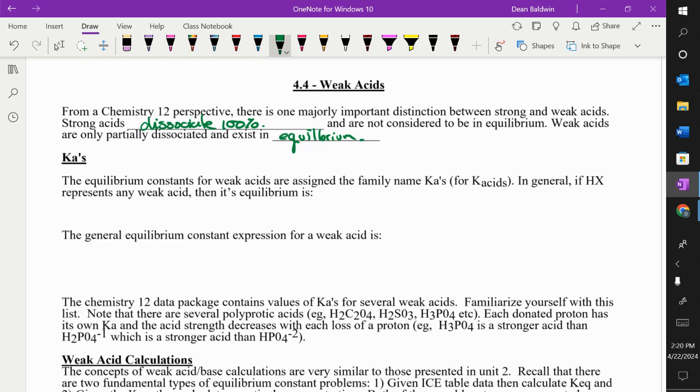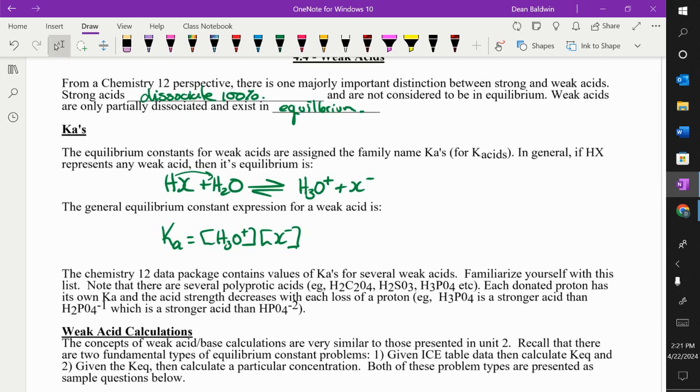So if we have a weak acid HX, we add it to water. What happens? This is going to donate the proton to water. You're going to get H3O plus and X minus. What's the KEQ or the KA of this expression? Concentration of H3O plus times concentration of X minus over HX. Why do we not include the H2O? That is the Ka.